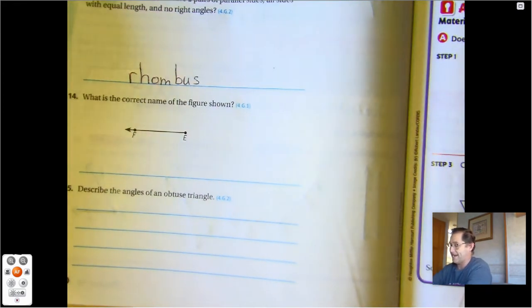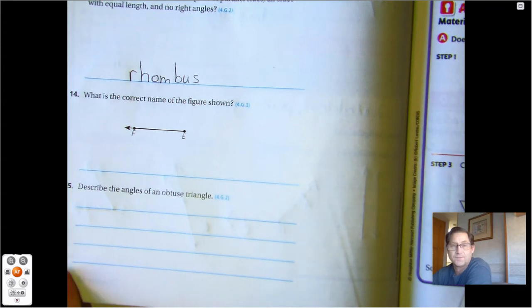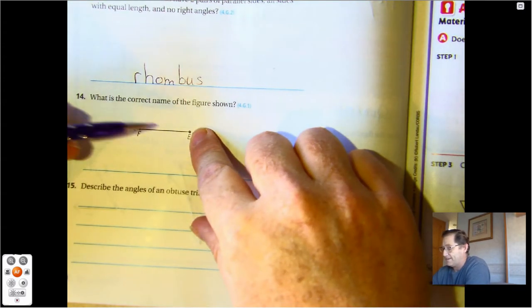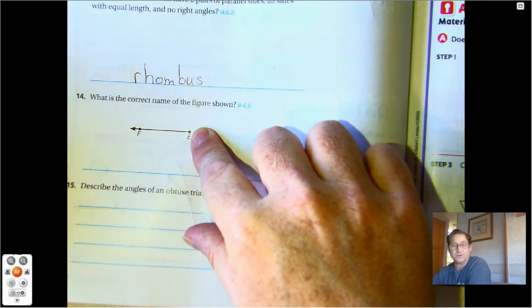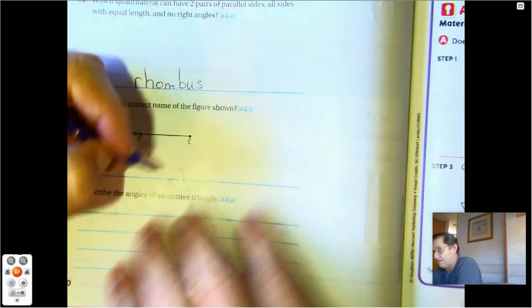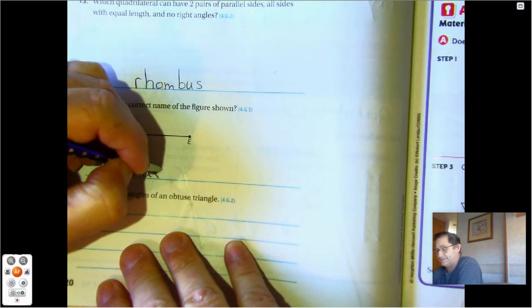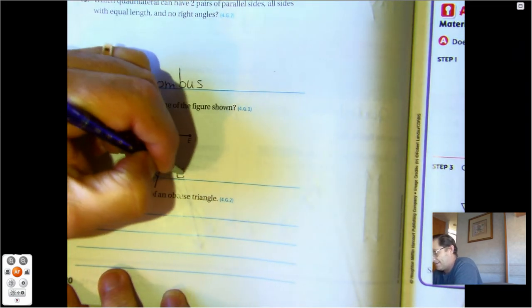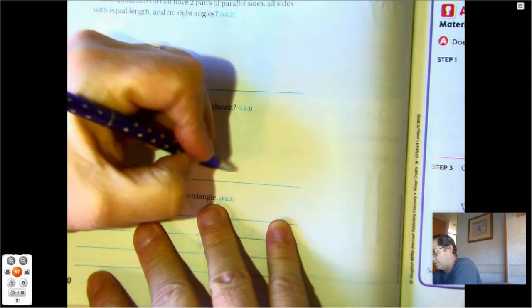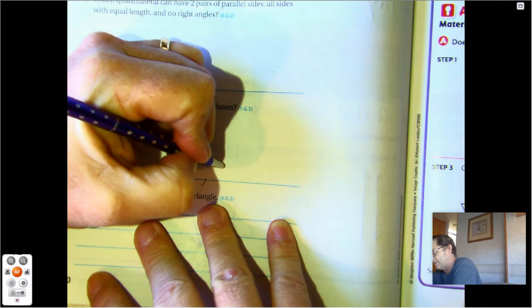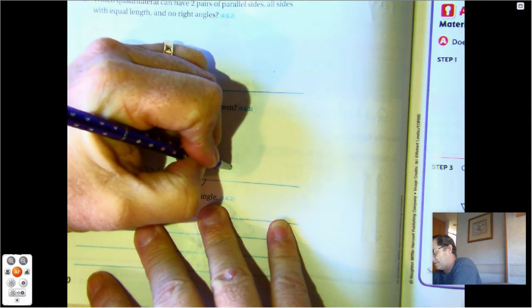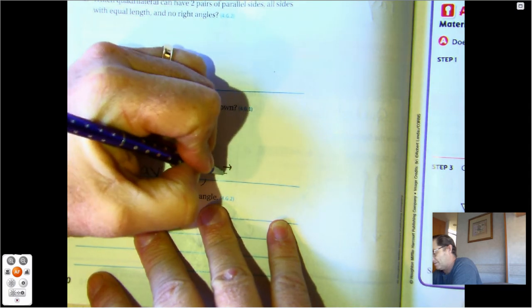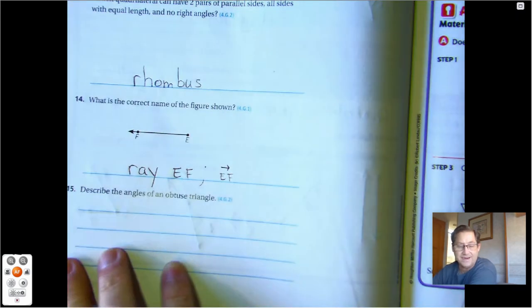14. What is the correct name of the figure shown? So I have one endpoint and it goes on continuously to the left—that would be a ray. And its name is Ray EF, so we could also call it Ray EF.